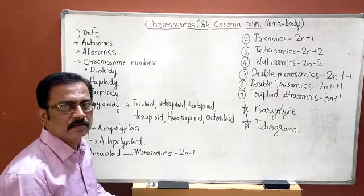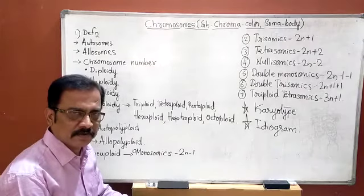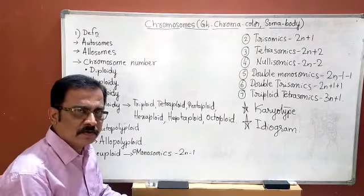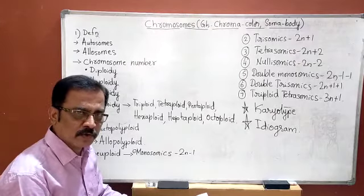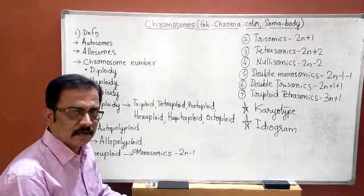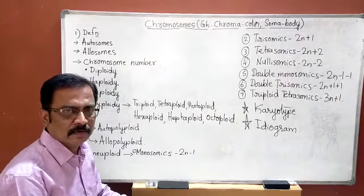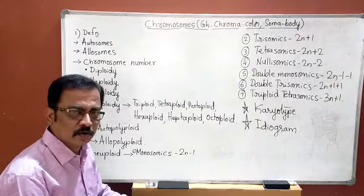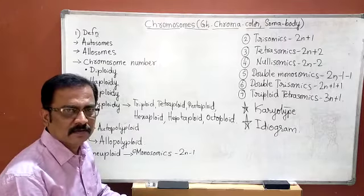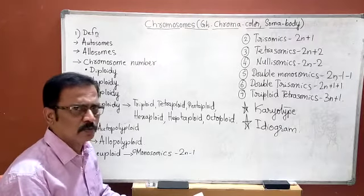In this topic, we have to discuss about the definition, types, then different conditions in the chromosome number, karyotype, ideogram, chromosome structure, and then giant chromosomes like salivary gland chromosomes and lampbrush chromosomes.